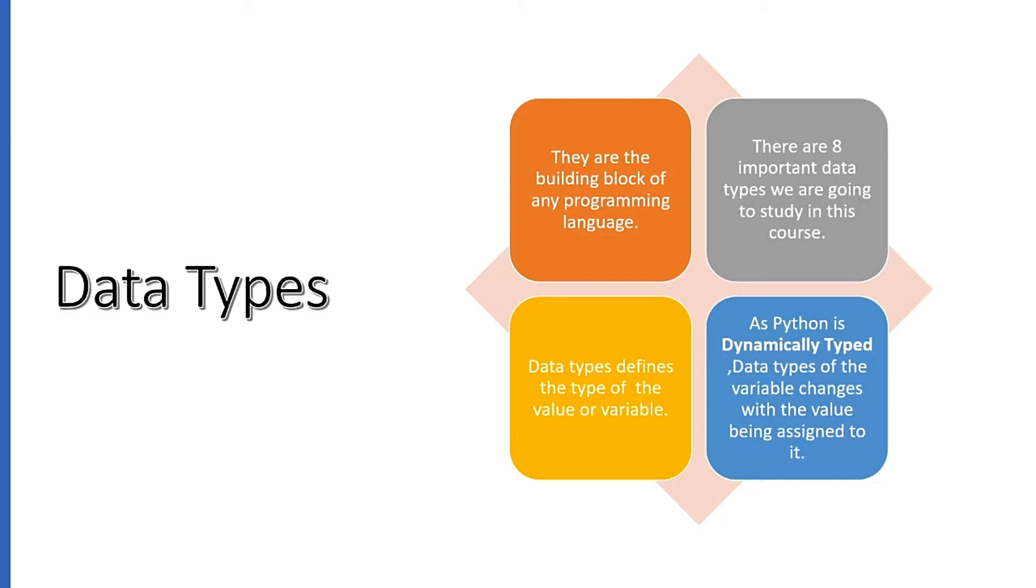You talk about any programming language, there will be a data type and it will be a building block. If there is no data type, then it's very difficult to manage the data. Now, what is data type? In particular, there are two terms we see there: data and type. Now, if we talk about data, what is data? Data is just any number, or any value, any character, or any word, anything is data. And if we define its type, like what kind of data that is, that becomes a data type.